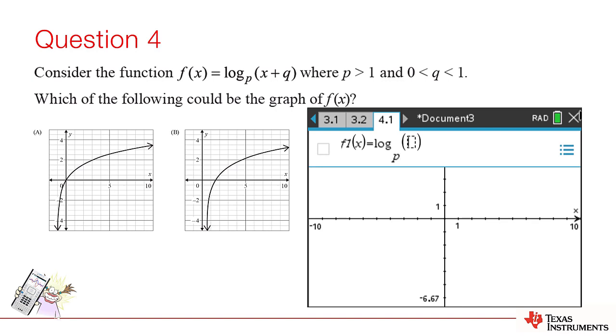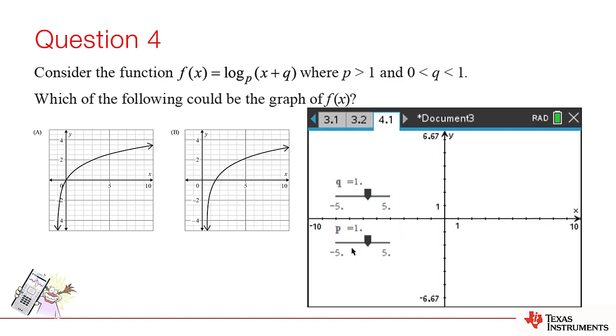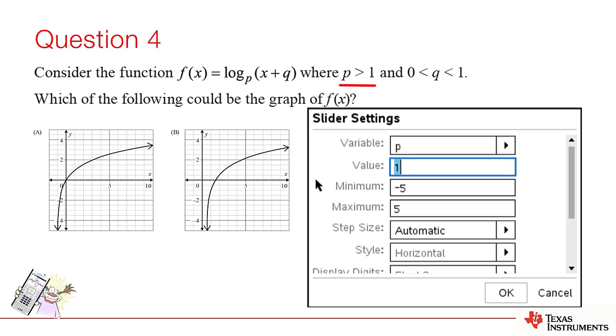Using p and q in the expression, however, automatically generates sliders for each. We can restrict the sliders to operate as per the question's restrictions. And, whilst there are infinitely many possibilities to explore, we can eliminate our options pretty quickly.